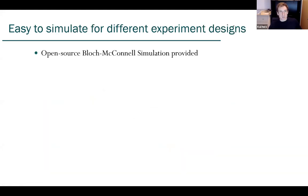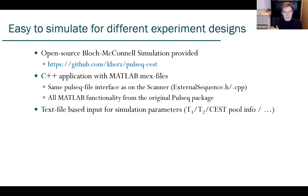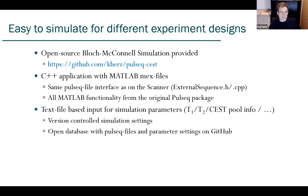How is it easy to simulate? We provide an open source Bloch-McConnell simulation framework, and you can find that on GitHub. It's basically a C++ application called from MATLAB via mex files. We chose those languages for two reasons. First, the C++ application, because then we can use the exact same Pulseq file interface as on the scanner. We really make sure that we read the same thing in our simulation that the scanner reads. And we can get all the MATLAB functionality from the original Pulseq package. For the simulation, you also have a text file based input for the simulation parameters, such as water T1, T2, accessible info, field strength, et cetera. Since this is text based, we also can have version control simulation settings. In fact, we have an open database available where we collect Pulseq files and parameter settings.